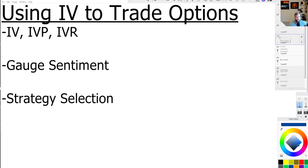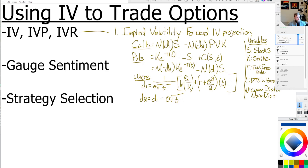Let's start with the heavier one — and again, don't let the formula scare you, stand your ground. If you're familiar with the Black-Scholes model, that's what you're seeing here. We're looking at how you calculate implied volatility for calls and puts.